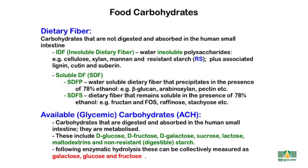As shown in this slide, food carbohydrates can be conveniently divided into Dietary Fibre and Available or Glycemic Carbohydrates. Dietary Fibre is subdivided into Insoluble Dietary Fibre and Soluble Dietary Fibre. Soluble Dietary Fibre is then subdivided into fibre that precipitates in 78% alcohol and fibre that remains soluble in 78% alcohol — essentially the non-digestible oligosaccharides such as fructooligosaccharides, raffinose, stachyose and the like.